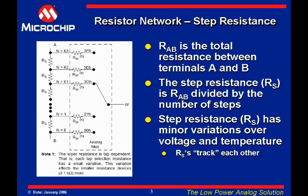In the MCP401X and MCP402X devices, the wipers can connect to either terminal A or terminal B, so there are 63-step resistors — allowing full-scale and zero-scale connections. In the MCP41XXX and MCP42XXX devices, the wipers cannot connect to terminal A, and there are 256-step resistors.